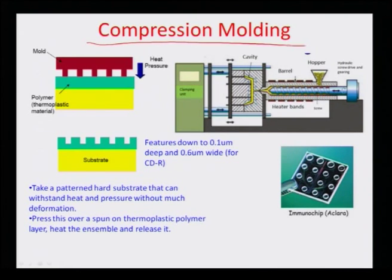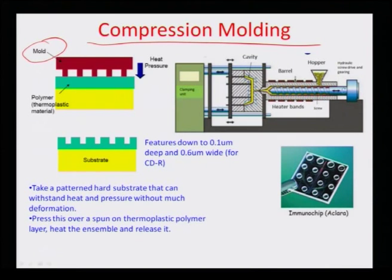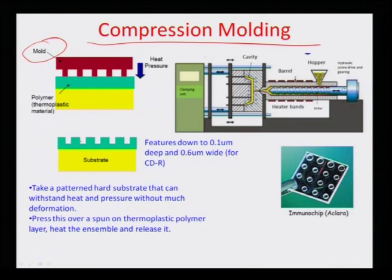Now let us look at some other techniques for polymer MEMS apart from soft lithography. One technique that comes to mind immediately is compression molding, which mechanical engineers may already be aware of. It means there is a hard mold that can withstand temperature and pressure, and a thermoplastic polymer is deposited on top of a substrate. Heat and pressure are applied to imprint the mold onto the thermoplastic material, and once the material is set, the mold is withdrawn, transferring the pattern to the substrate.